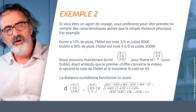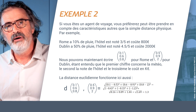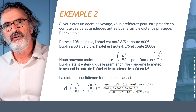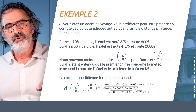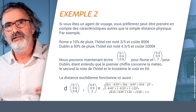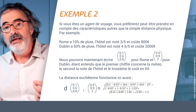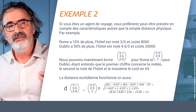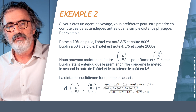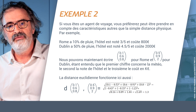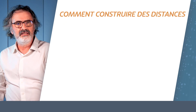So you just do the computations and you end up with a magic number: 1.3. What is interesting with this 1.3 is not that it actually means something, but that it can be compared to another magic number — which would be the distance between Paris and Brussels, for example.